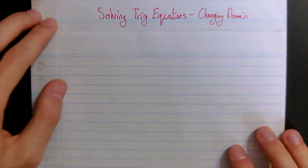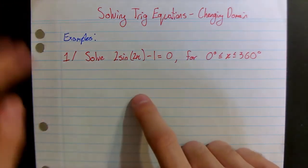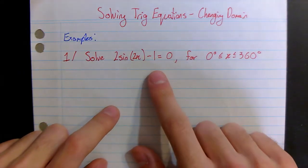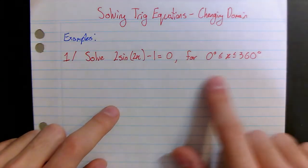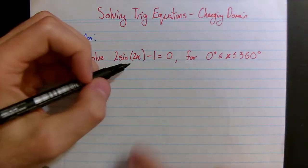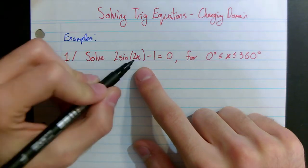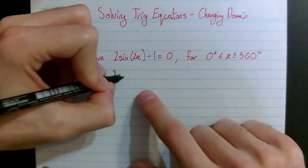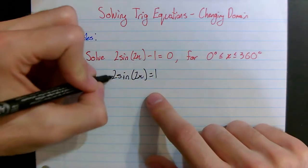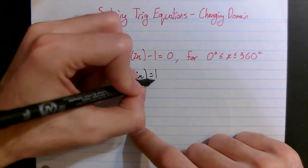So let's begin. What we're going to come across is something like this, where we're asked to solve 2sin(2x) minus 1 equals 0, for the domain from 0 to 360 degrees. The first thing we're going to do is make sin(2x) the subject. We add 1 to both sides to get 2sin(2x) = 1, then divide by 2 to get sin(2x) = 1/2.